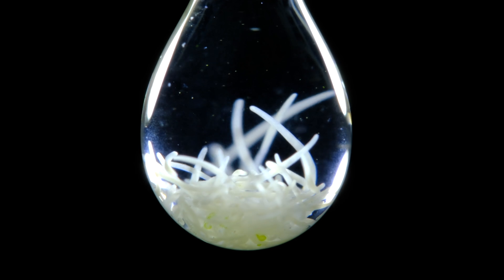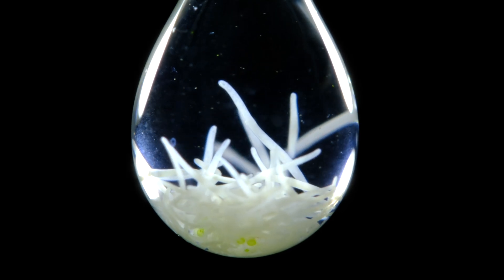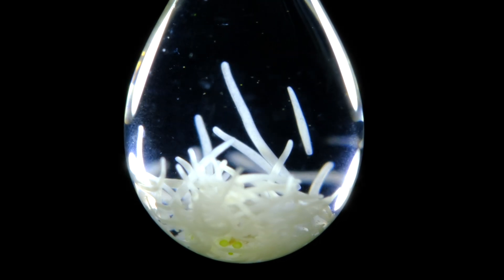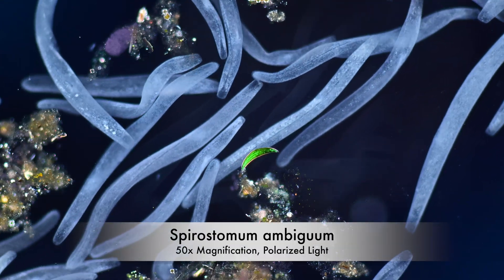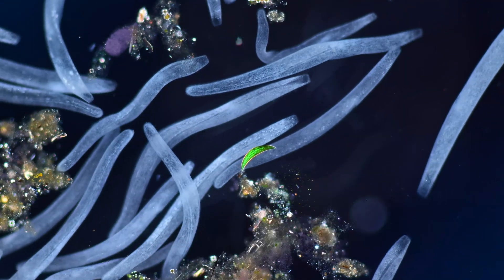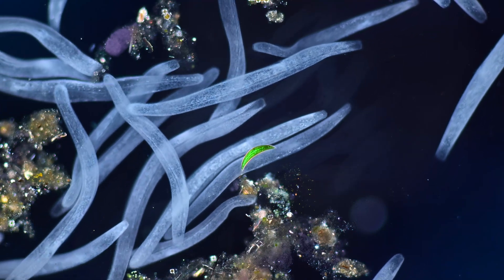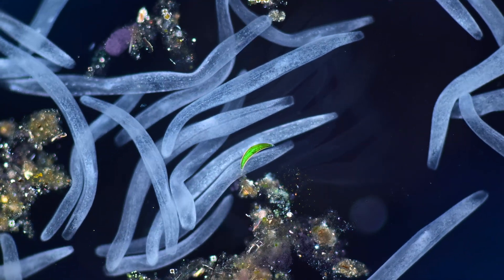Worm-like stringy creatures peacefully gliding through water. They seem calm and almost a bit clumsy. Ladies and gentlemen, may I introduce you to Spirostomum ambiguum, the so-called giant marshworm. But please don't get fooled by this nickname.